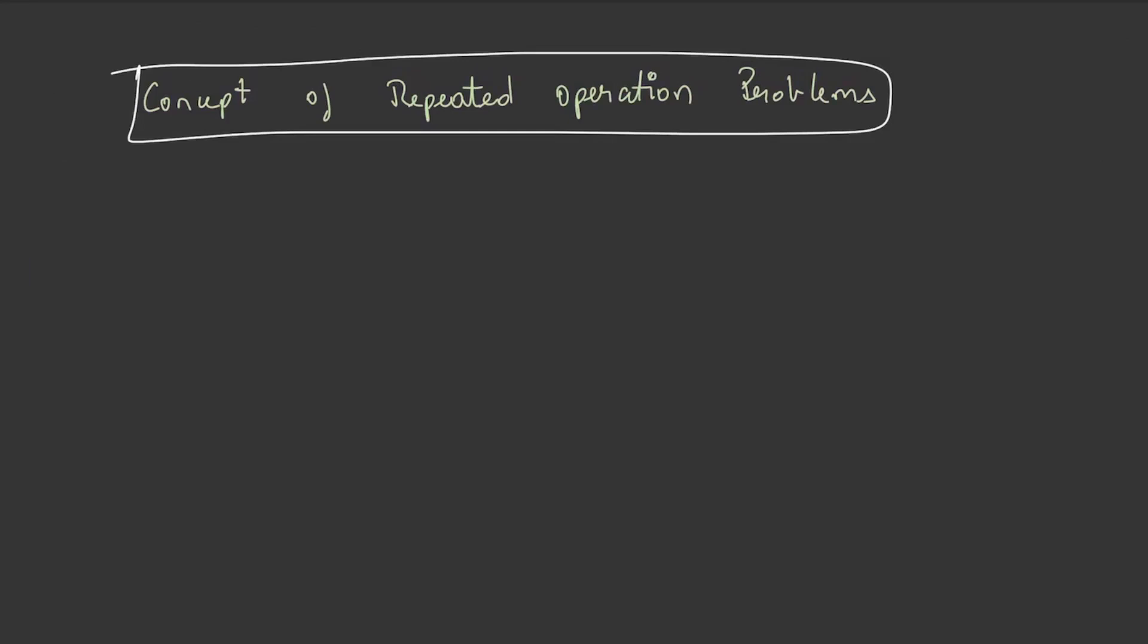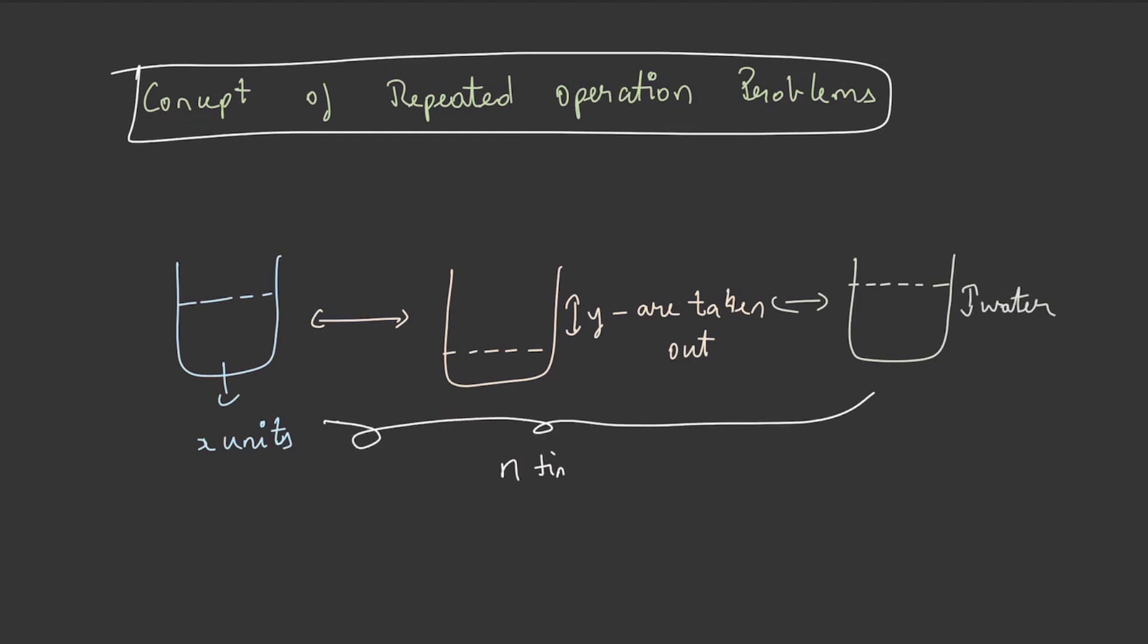Suppose a vessel contains x units of a certain liquid, from which a certain amount, say y units, are taken out and replaced with water. If this process happens n number of times, then the quantity of liquid can be determined by x × (1 - y/x)^n.